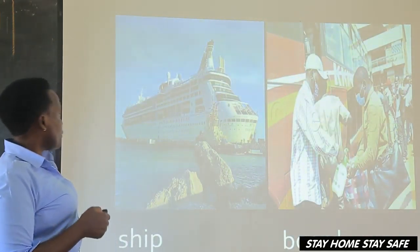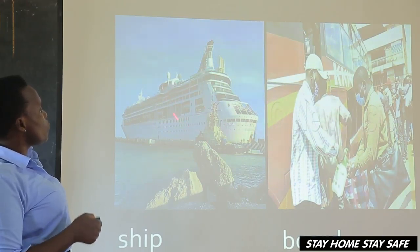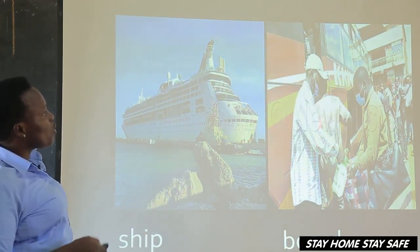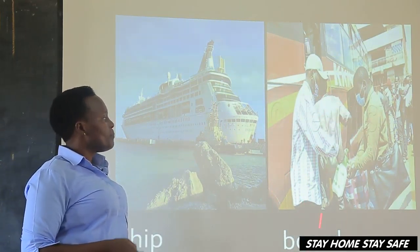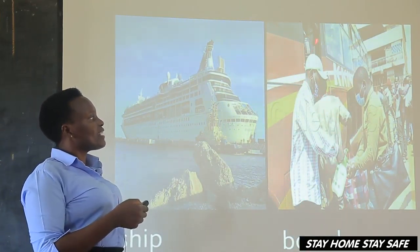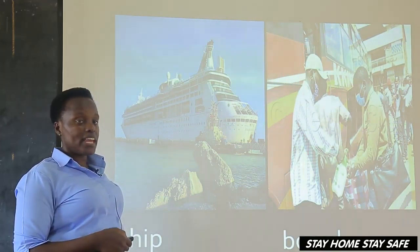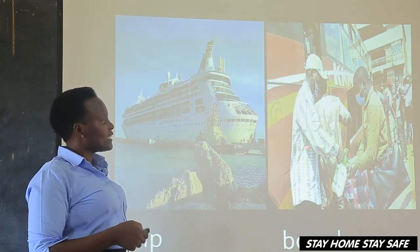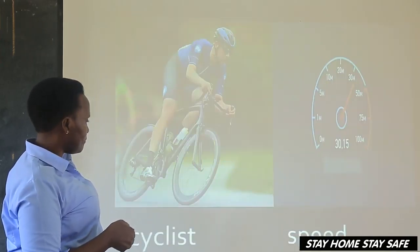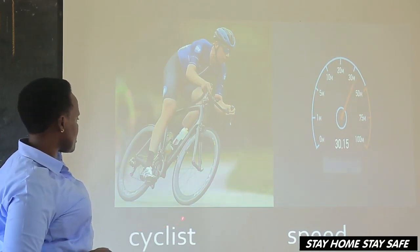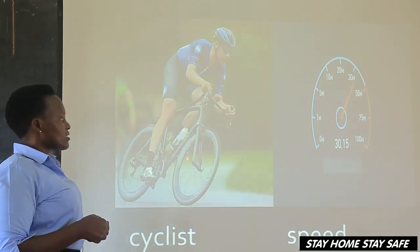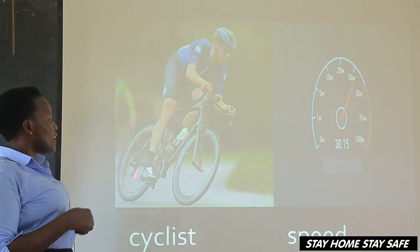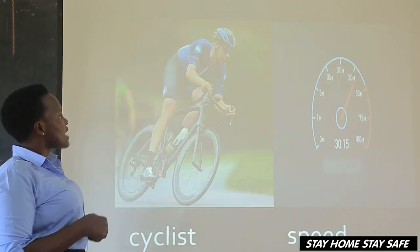Then we have a ship — a means of water transport. Then, 'board.' To board a bus means these people are entering the bus, going somewhere. We board the bus. Then, 'cyclists.' A cyclist is a person who rides a cycle.